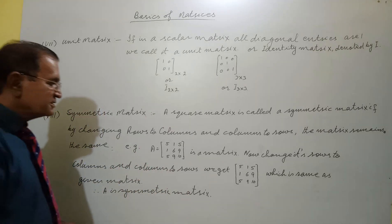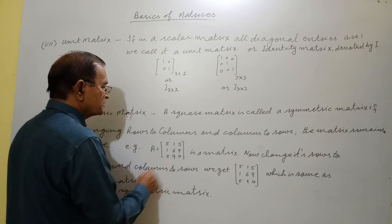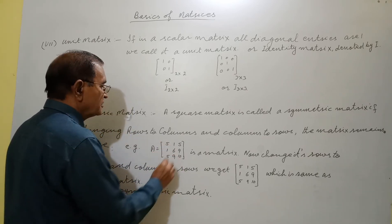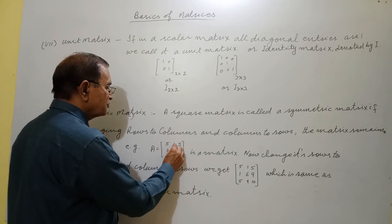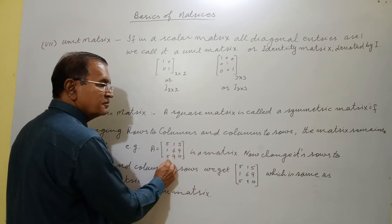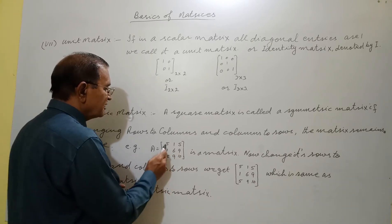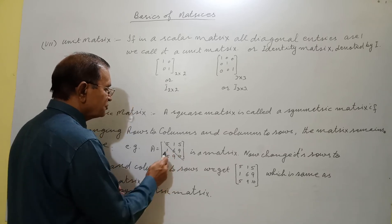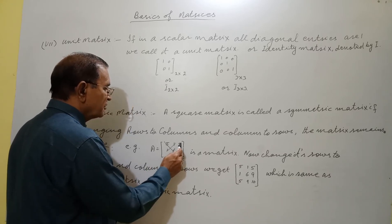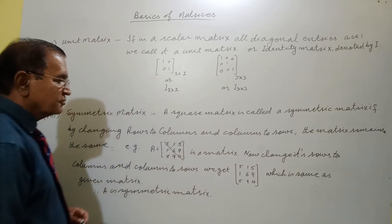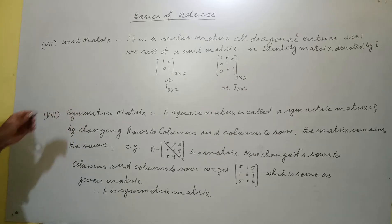How to write a symmetric matrix: we have a diagonal, and the reflection across the diagonal should be the same. For instance, elements 1,1 and 5,5 mirror each other. So we can call such a matrix a symmetric matrix.